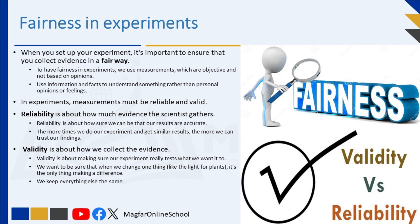To have fairness in experiments, we use measurements which are objective and not based on opinions. Being objective means using information and facts to understand something rather than personal opinions or feelings. In the context of setting up an experiment, it means relying on measurements and data that everyone can agree on, rather than just what someone might think or feel. Objectivity helps make the experiment fair and reliable for everyone, because it's based on things that can be measured and observed by anyone in the same way.